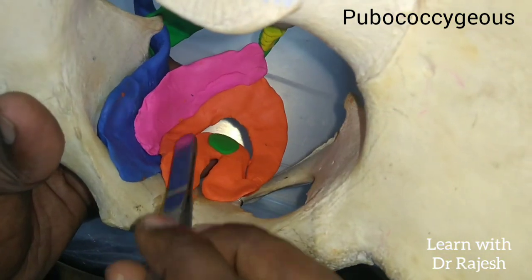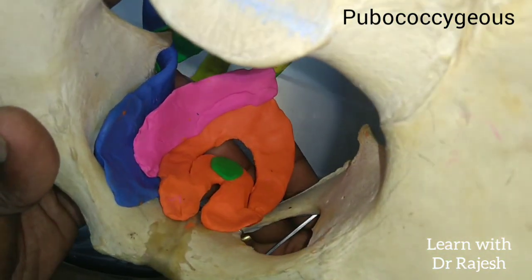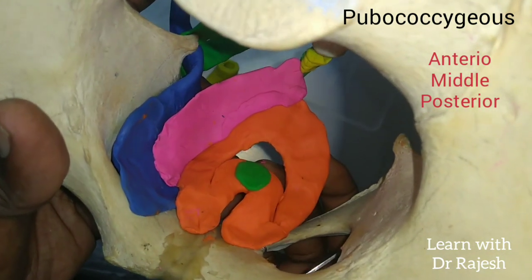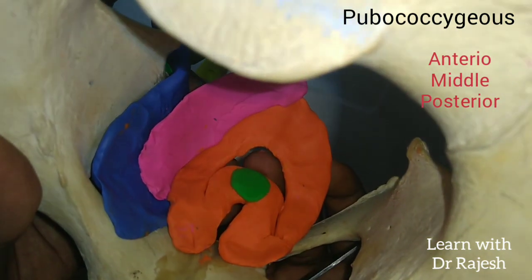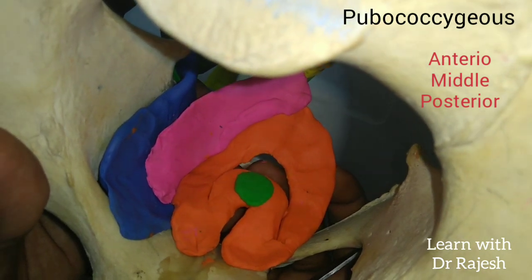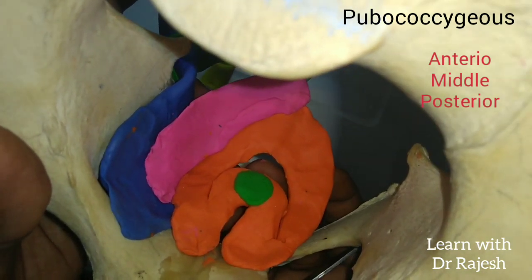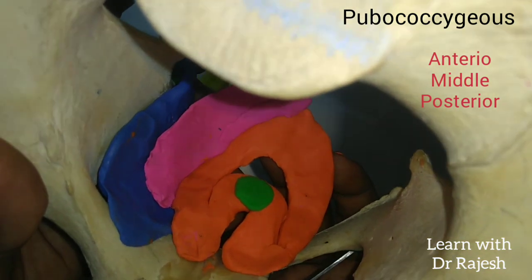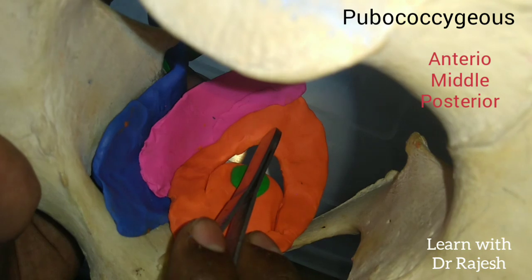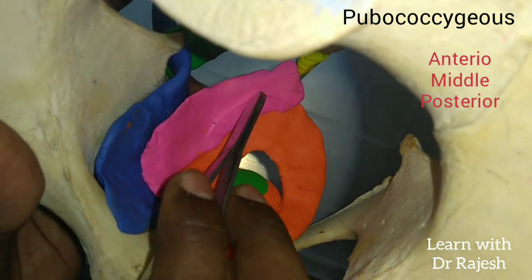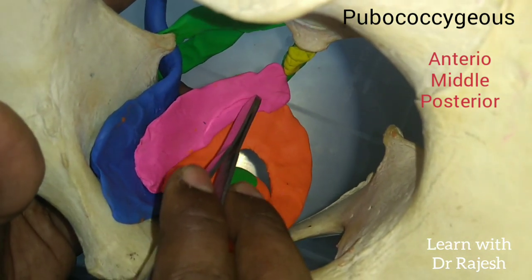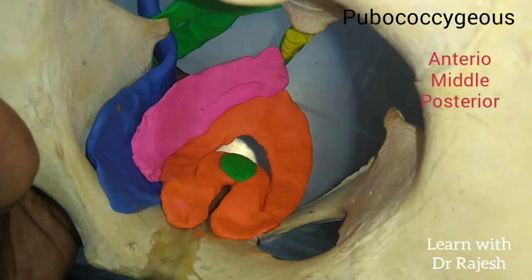These are the three components of the pubococcygeus part: the anterior fibers, called the levator prostate in males or sphincter vaginae in females; the middle fibers, called the puborectalis; and the posterior group of fibers — which together form the pubococcygeus.